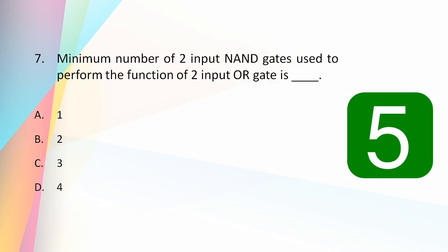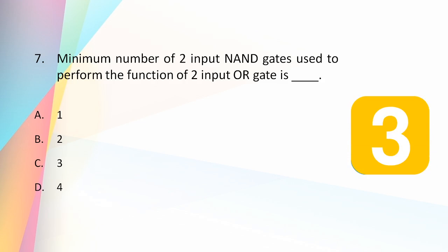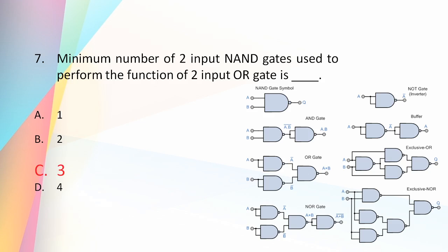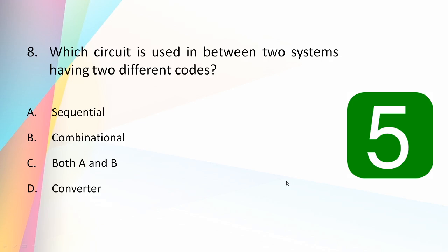The minimum number of two-input NAND gates used to perform the function of a two-input OR gate is: one, two, three, or four? The answer is three. The NAND gate is a universal gate and can be used to obtain any other gate. To obtain an OR gate with two inputs, three NAND gates are required.